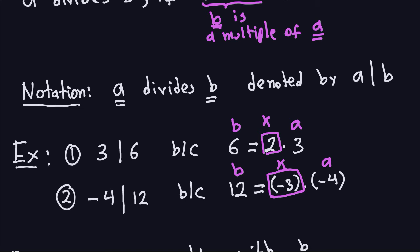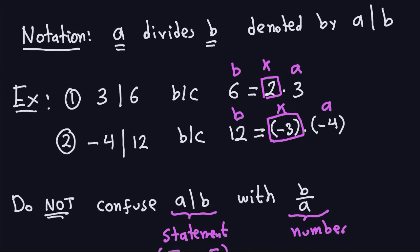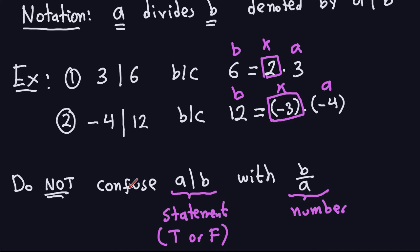This is just introducing some notation, and I'm sure you've seen this many times. One important remark: never confuse A|B — which is a statement saying A divides B — with B divided by A, which is just a number. The statement A|B may be true or false. For example, '4 divides 15' is a false statement. The reason I'm explaining this is that some books write the division bar slightly diagonal so it looks like a fraction, but it's actually a statement.